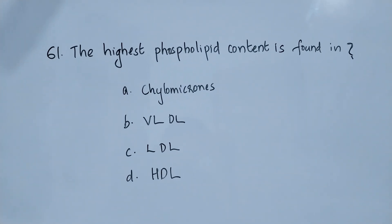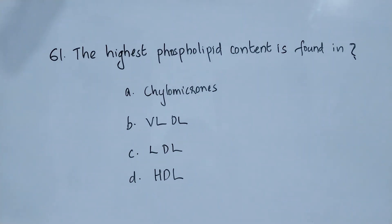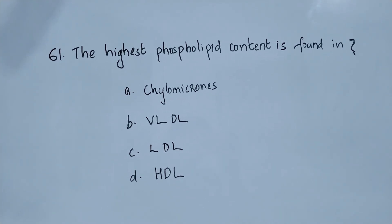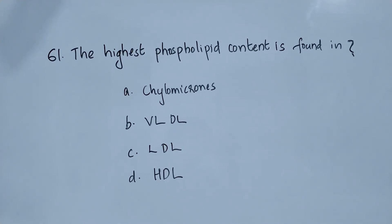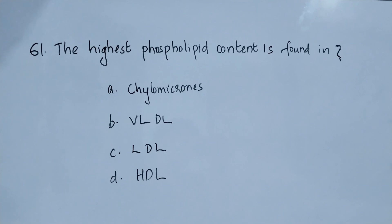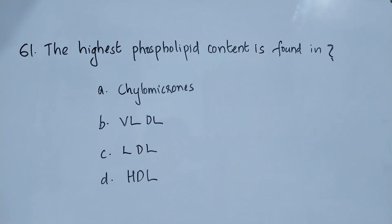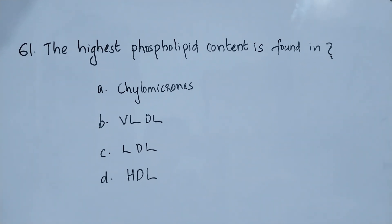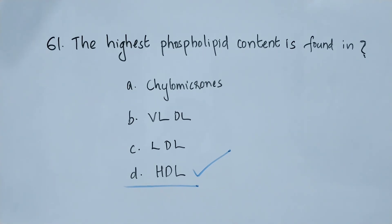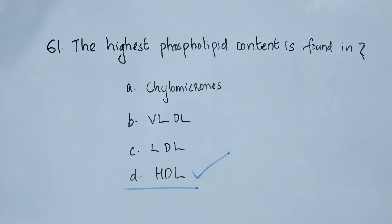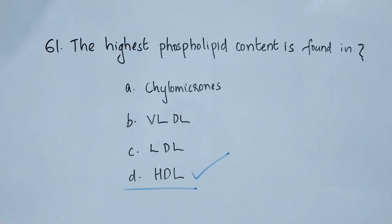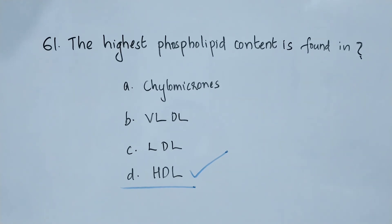Question number 61. The highest phospholipid content is found in: option A chylomicrons, option B VLDL, option C LDL, option D HDL. The highest phospholipid content is found in high-density lipoprotein. The right answer is option D, HDL.